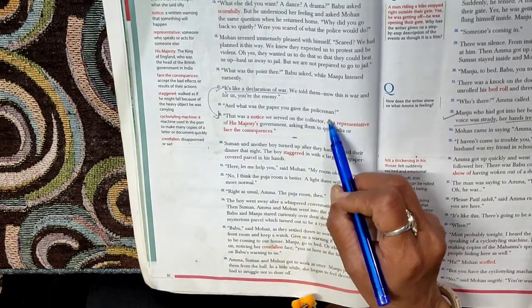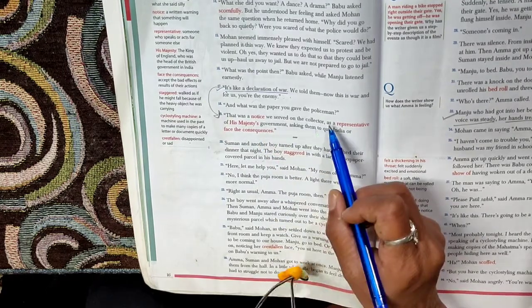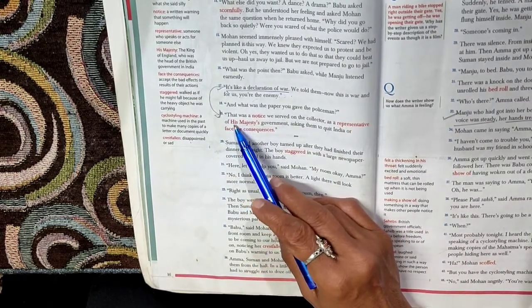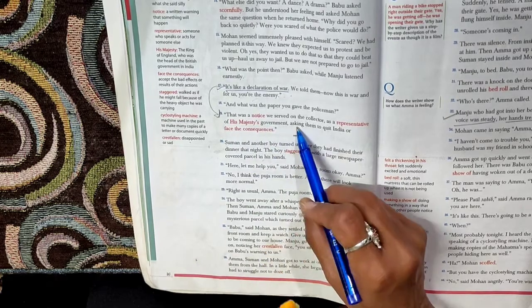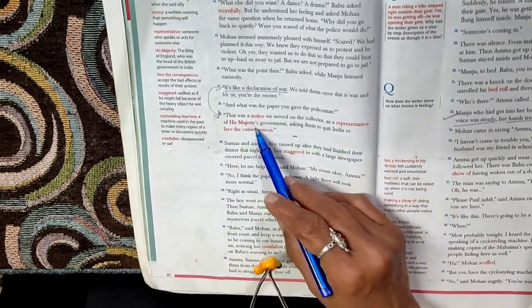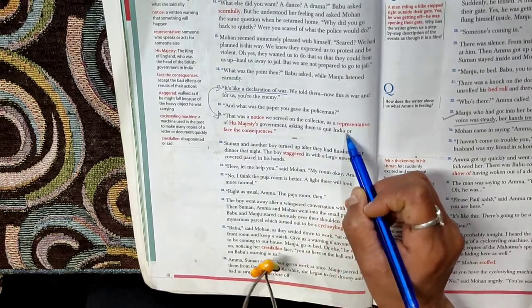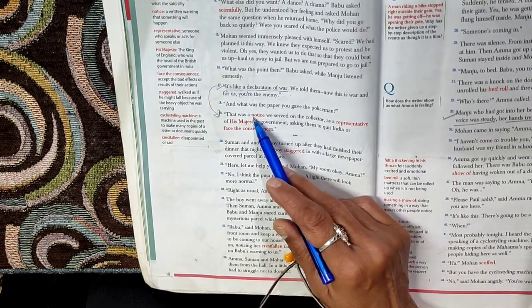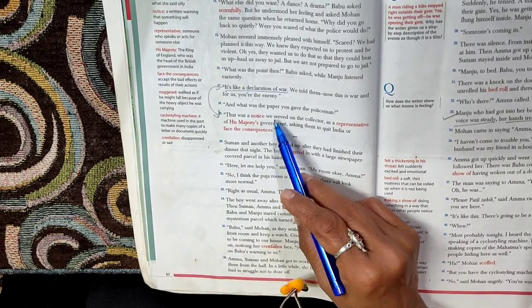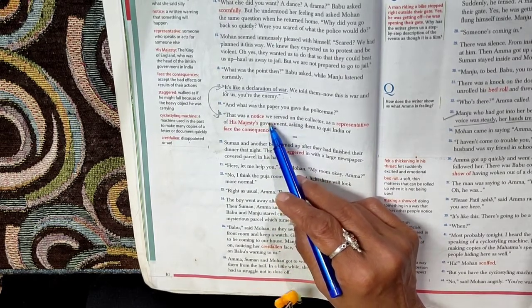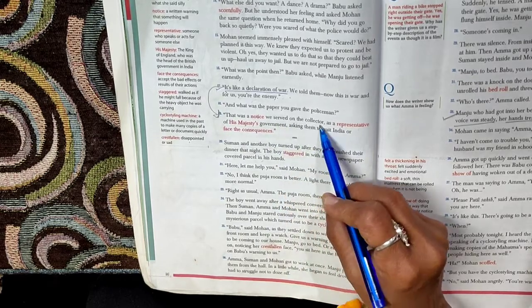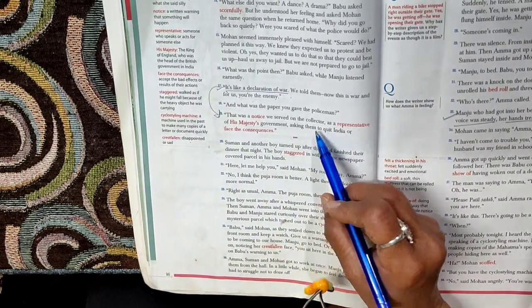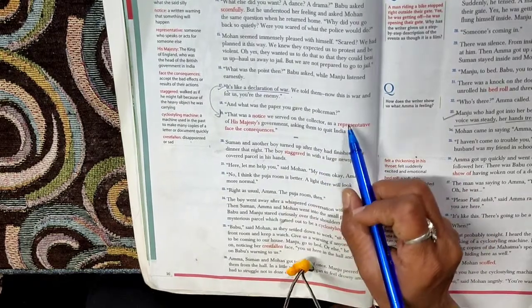And what was the paper you gave that policeman? Babu is still inquisitive and curious. So Mohan replies, that was a notice we served on the collector as a representative of his majesty's government, asking them to quit India or face the consequences. It was a written notice that these students as representatives of the Indian people gave to the collector, because the collector is a representative of his majesty's government, the British crown. He is working for the British officials.